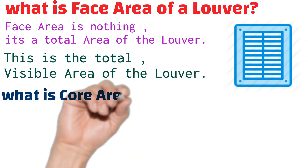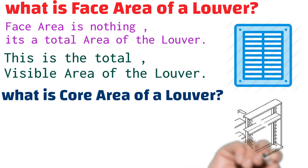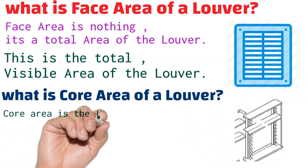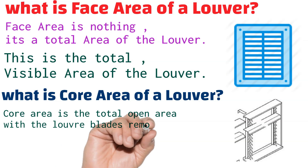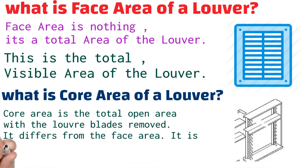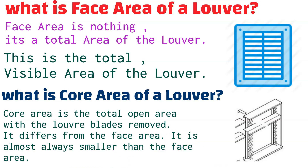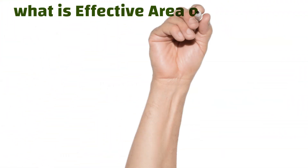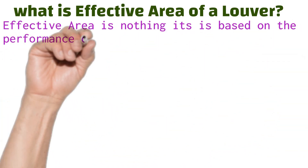What is the core area of a louver? Core area is the total open area without the louver blades. It differs from the face area and is almost always smaller than the face area.